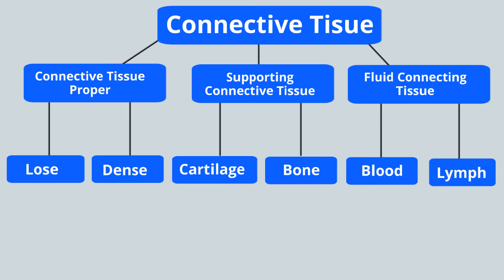Let's take a look at this chart to learn about the different types of connective tissue. There are three major types: connective tissue proper, supporting connective tissue, and fluid connective tissue.